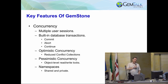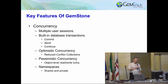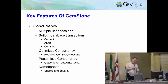With transactions, we have the idea you would have with an RDBMS where there are commits and aborts of transactions. GemStone is designed around optimistic concurrency, which says that we don't think conflicts will occur, and if they do we'll deal with them. But we also support pessimistic concurrency — locking. You can lock at the object level.